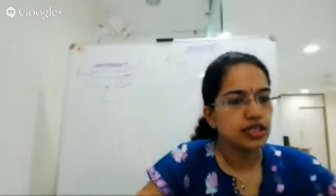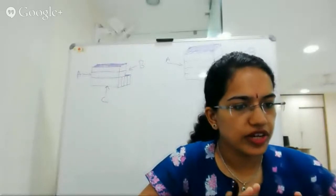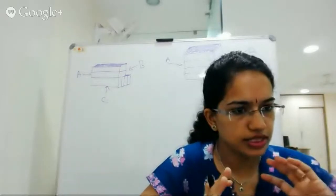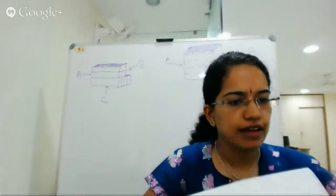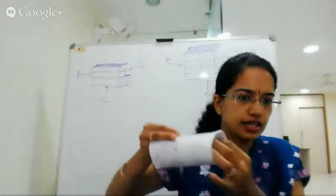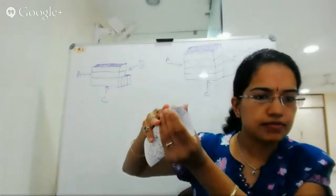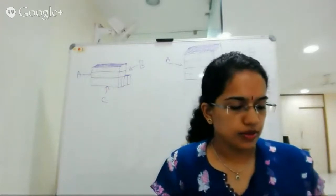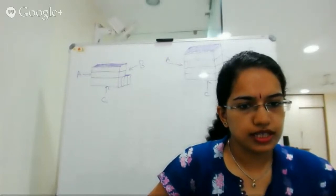Hello, welcome to today's class. Today we will be talking about the concept of spatial reasoning. We will try to understand how to translate a 2D image into a 3D image. For example, if I have a paper like this and I want to make a cube out of it, I can make a rectangle here — this is how a 2D image can be converted into a 3D one.